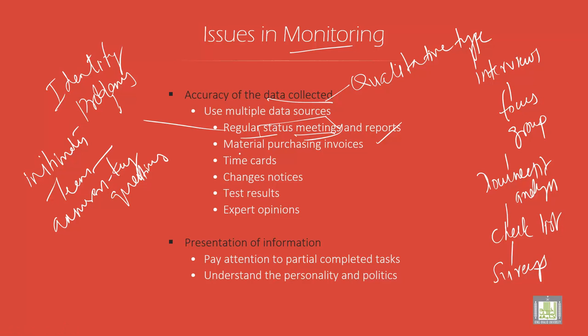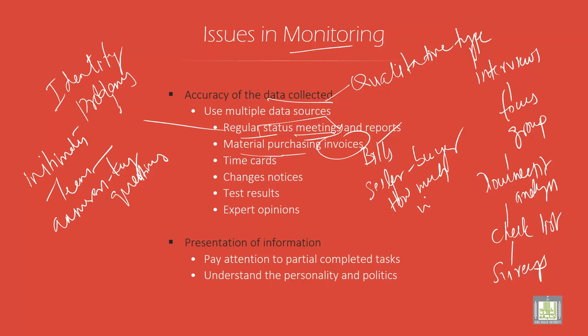Next is material purchasing invoices. A material purchasing invoice — what is an invoice? An invoice is a bill from the seller to the buyer. It gives details about how much you have bought — how much, what, when, how. So all the details are given in this bill.